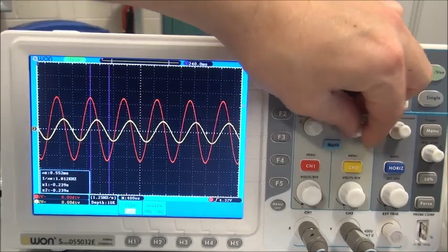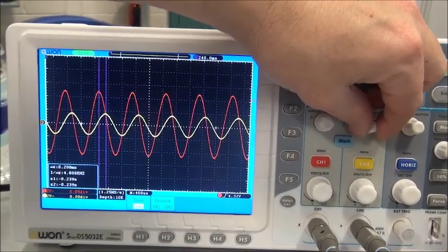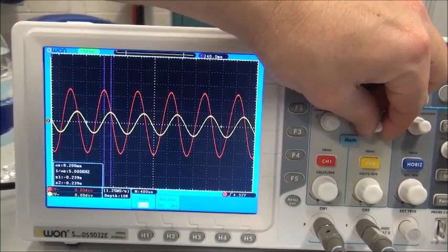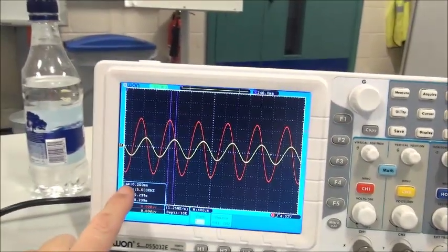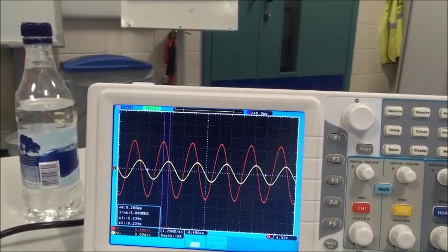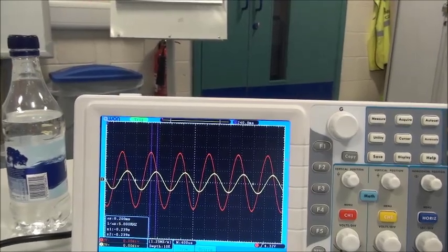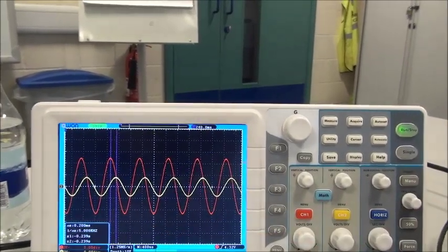That gives you the change in phase there. The change in x—x is in this direction—is 200 milliseconds. So from that you could work out the phase, you could work out the changing phase using these cursors here.